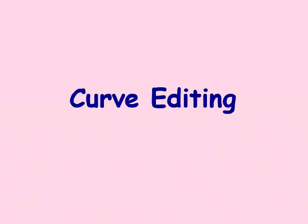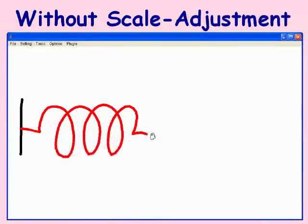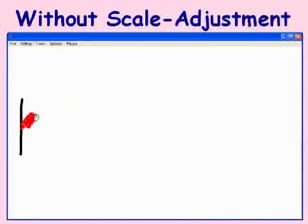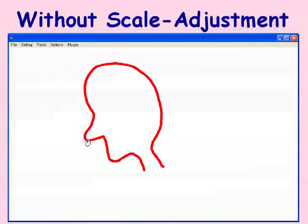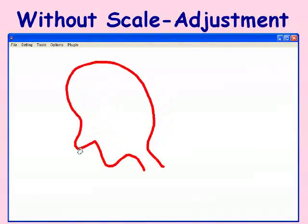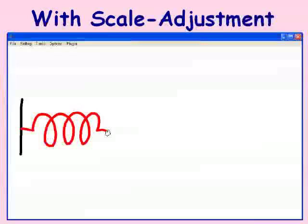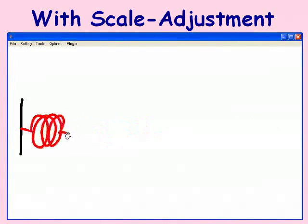We can also edit curves. Without scale adjustment, the curve grows and shrinks but does not exhibit the rigidity we want. With scale adjustment, the curve appears more rigid and behaves like a real wire.